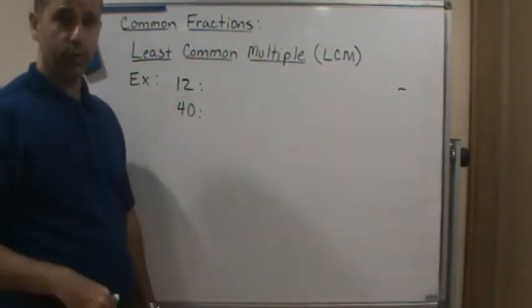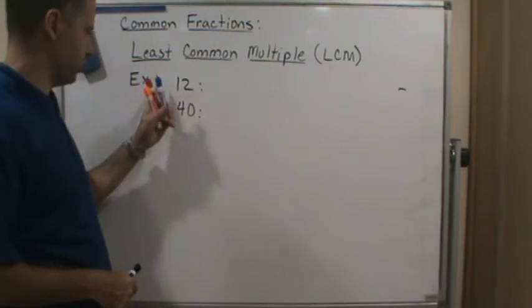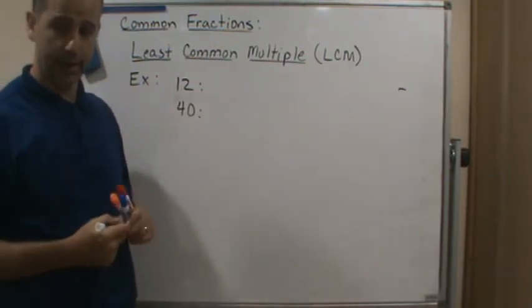Okay, so in this example, we're going to find the least common multiple of 12 and 40 by using the prime factorization.